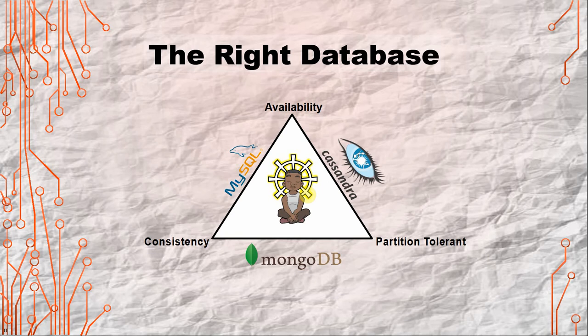Now let's go with the next one: choosing the right database. I give some examples here but there are many more. The idea of this triangle is that you have to pick two things that you would like to have, and regrettably you may not have access to the third. For example, if you use MySQL you may have consistency and availability; if you pick Cassandra you have availability and partition tolerance but not consistency; if you pick MongoDB you have consistency and partition tolerance but may not have availability.